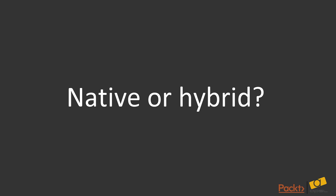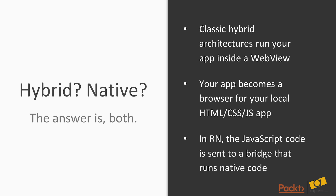So let's start with the first question: is a React Native app native or hybrid? The answer is both. A hybrid app is an HTML, CSS, JS app that runs inside a webview — basically your app becomes a browser with a bundled website running inside that webview. The opposite of a hybrid app is a native app, which uses the platform language and tools provided by Apple, Google, or the operating system.